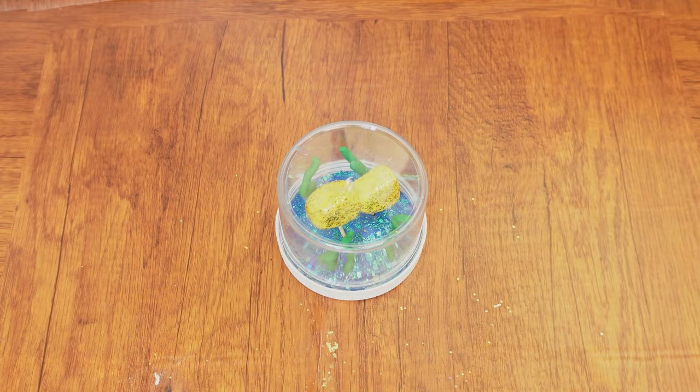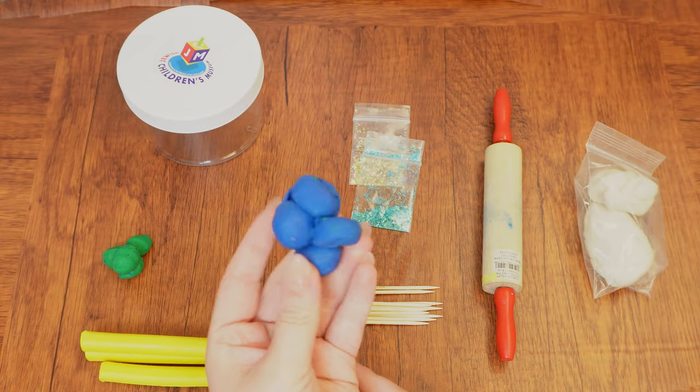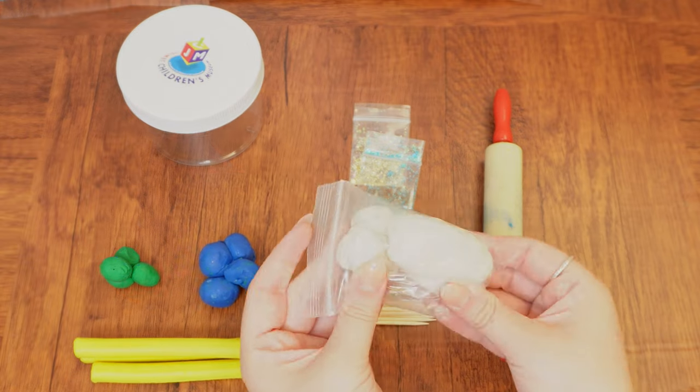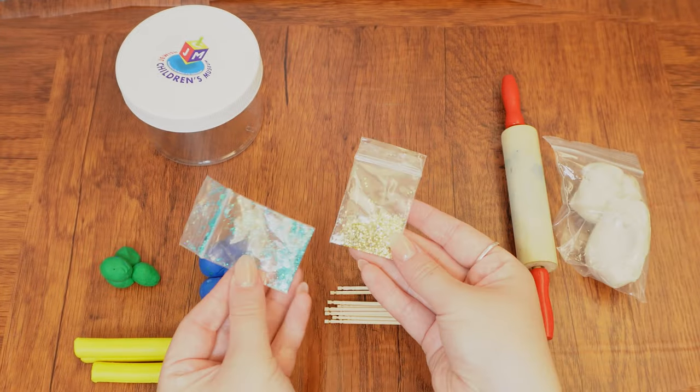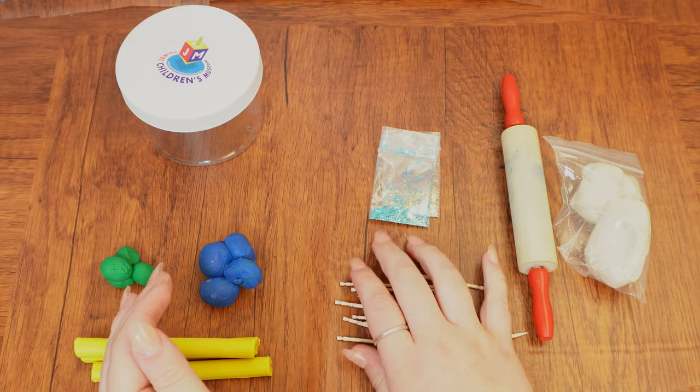Here are the supplies we will need: a short jar with a wide opening, blue green and yellow modeling clay, air dry clay, a rolling pin, blue and gold glitter, and toothpicks. Let's begin.